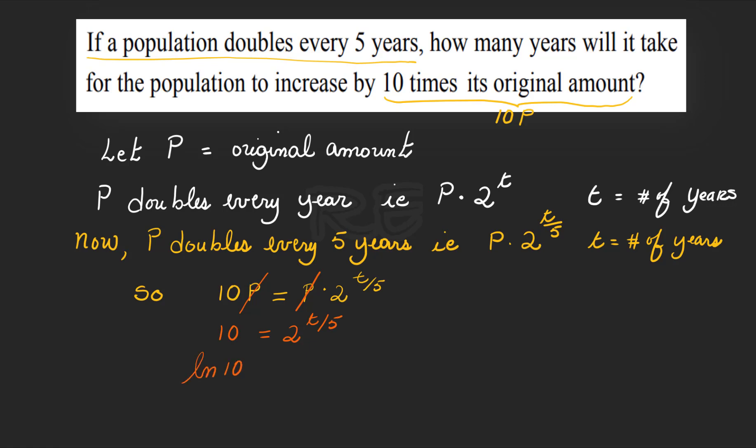Take the ln of both sides. ln 10 is equal to ln 2 to the t over five. Using the exponential law for logarithm, it's going to be ln 10 is equal to t over 5 ln 2.